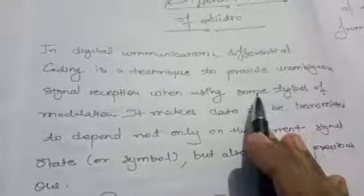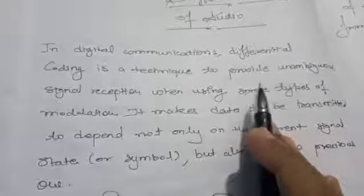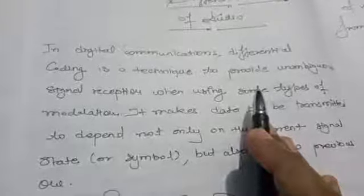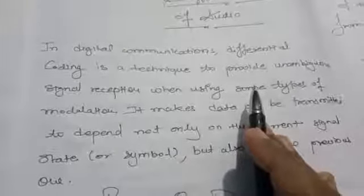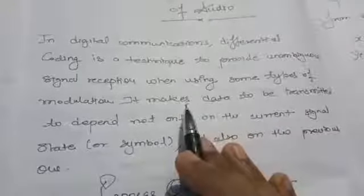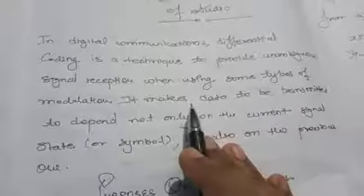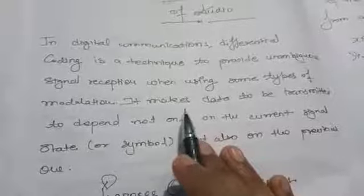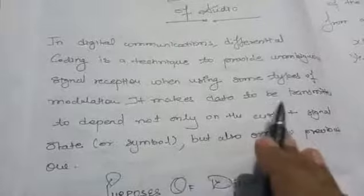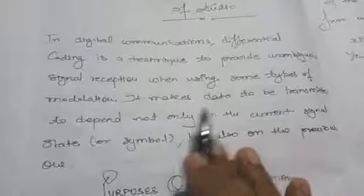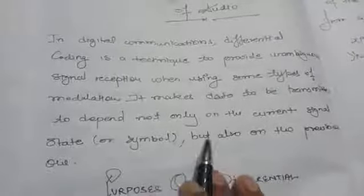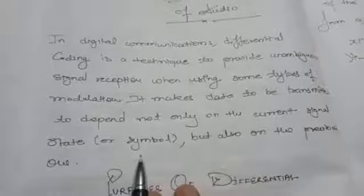We can see ambiguity when higher frequencies are present. In differential coding, the data transmitted depends not only on the current signal state or symbol, but also on the previous one.